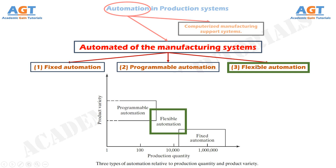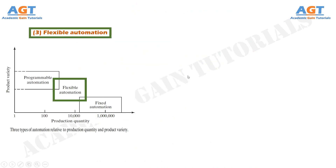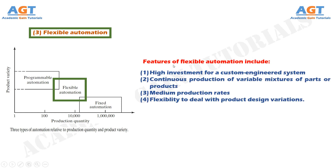Flexible Automation is an extension of programmable automation. A flexible automated system is capable of producing a variety of parts or products with virtually no time lost for changeovers from one design to the next — no lost production time for reprogramming, tooling, fixtures, or machine settings. The system can produce various mixes and schedules of parts instead of requiring batches. This is possible because differences between parts processed are not significant, so changeover is minimal. Features include: high investment for a custom engineered system, continuous production of variable mixtures of parts, medium production rates, and flexibility to deal with product design variations. Examples include flexible manufacturing systems that perform machining processes.